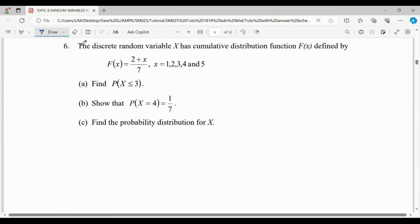Hi everyone. For this question, the discrete random variable X has a cumulative distribution function F(x) defined by the following formula, where x equals 1, 2, 3, 4, and 5. For the first question, find the probability where X is less than 3.